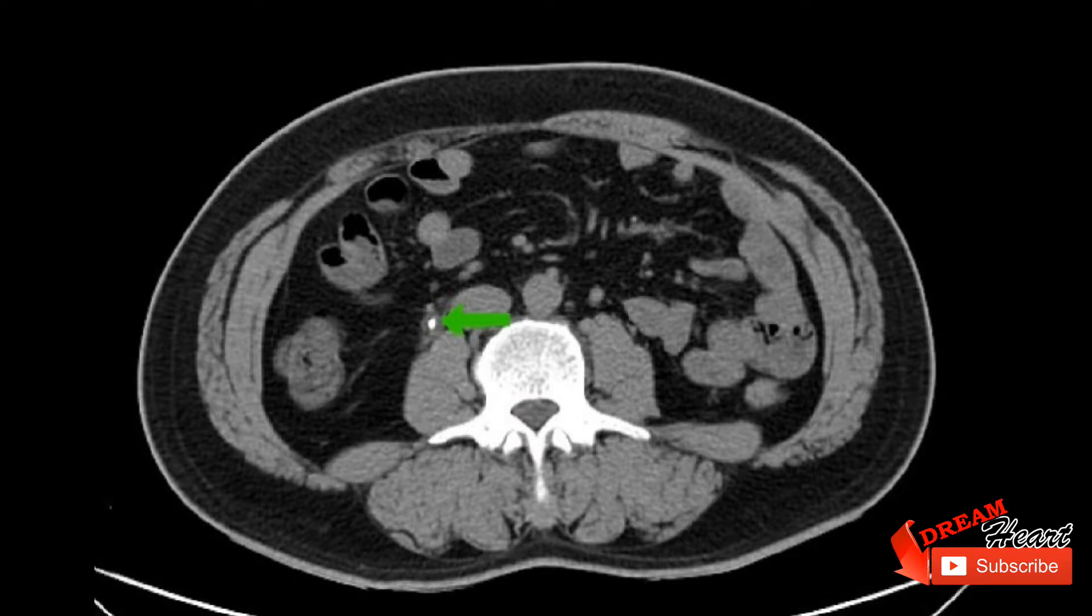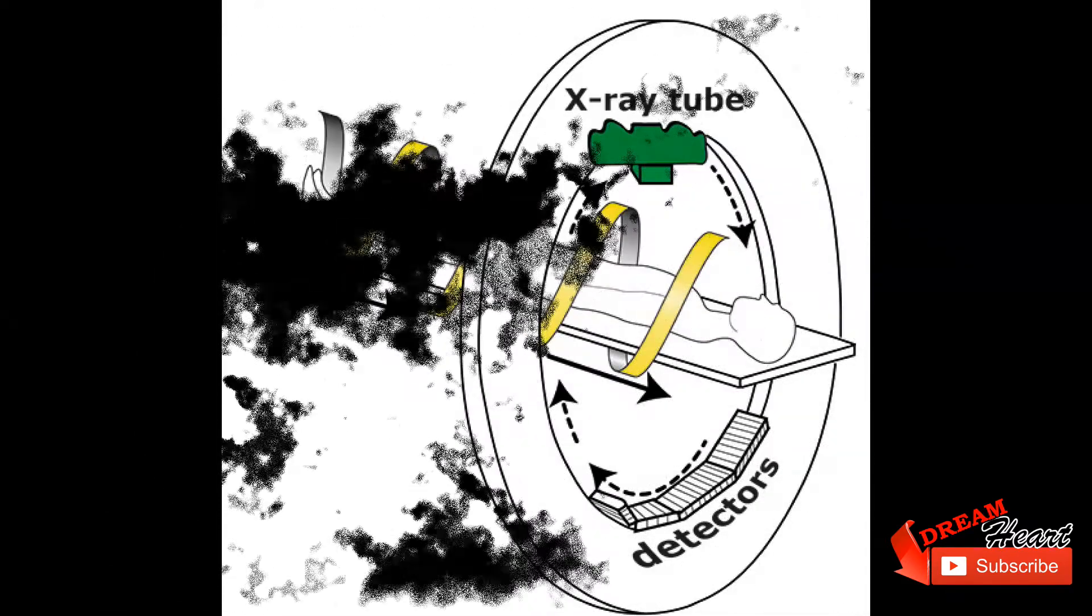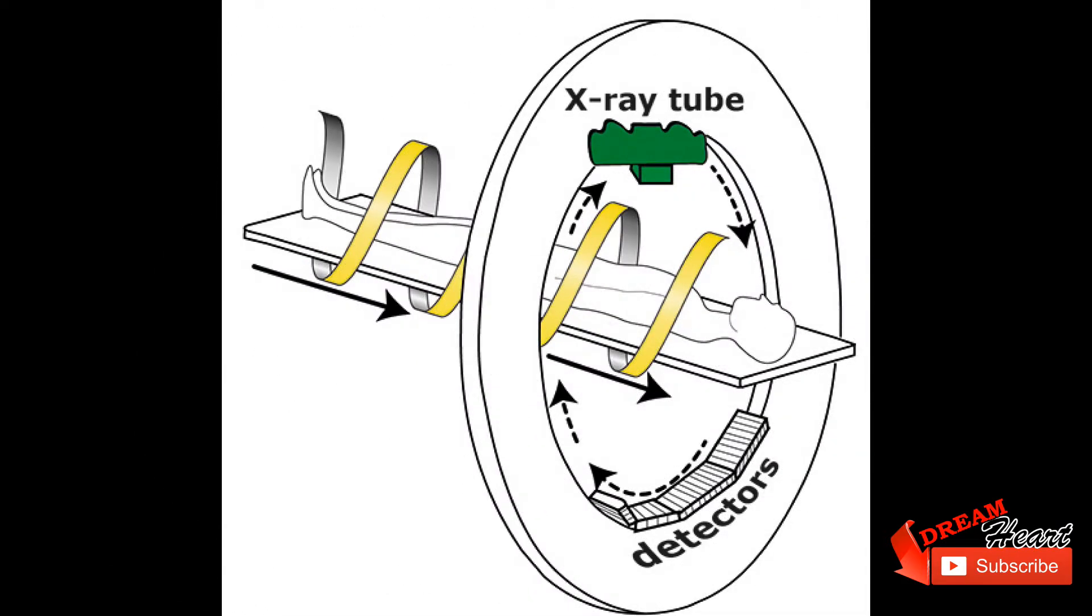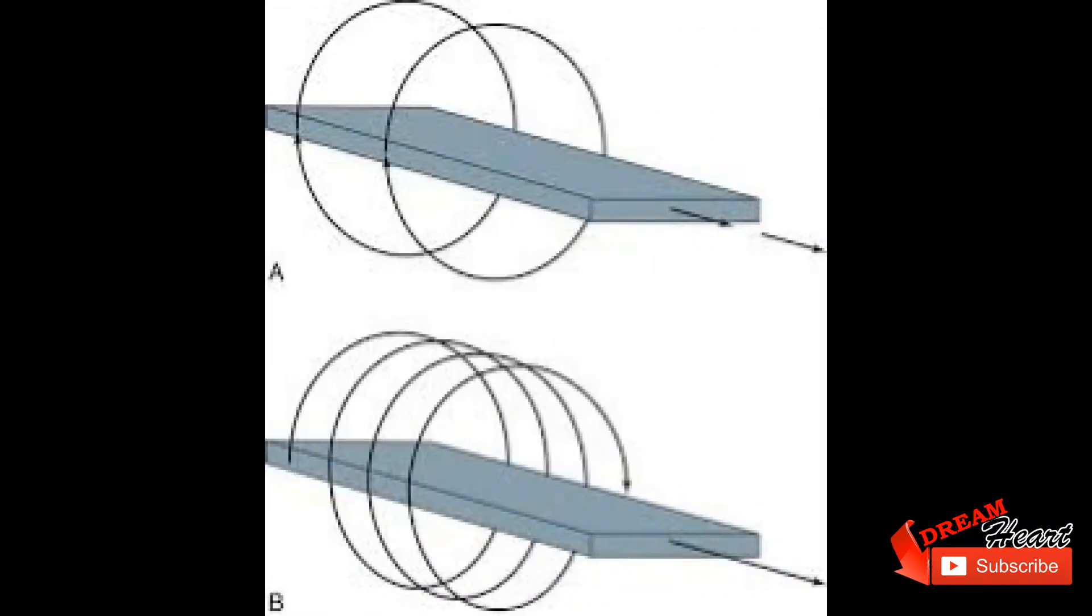Spiral or helical computed tomography was introduced in the early 1990s, with much of the development led by Willy Calender and Kazuhiro Katada. In older CT scanners, the x-ray source would move in a circular fashion to acquire a single slice. Once the slice had been completed, the scanner table would move to position the patient for the next slice. Meanwhile, the x-ray source and detectors would reverse direction to avoid tangling their cables.